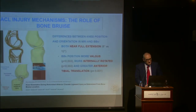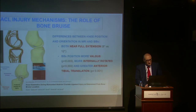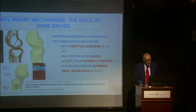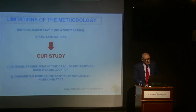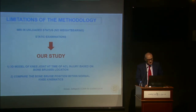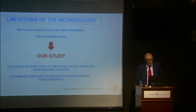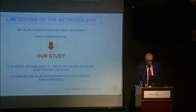We analyzed the DeFrate study from America, which found that bone bruise happens near full extension with the position in valgus and more internally rotated, with greater anterior translation. However, this is not really consistent with the data from our video analysis. MRI is in an unloaded, static status, so we tried to perform an analysis where we put a 3D model of the knee joint at the time of ACL injury based on bone bruise location and compared it with normal knee kinematics.